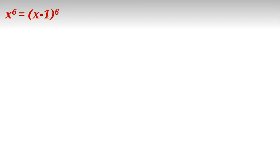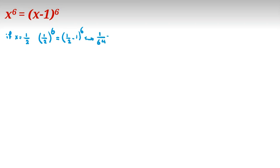We have x to the 6 equal to x minus 1 to the power of 6, and we want to find x. Let's try to find one answer first. If x equals one half, the left hand side is one half to the power of 6, and the right hand side is one half minus 1 to the power of 6, which is negative one half to the power of 6. Both give 1 over 64, so x equals one half is correct.